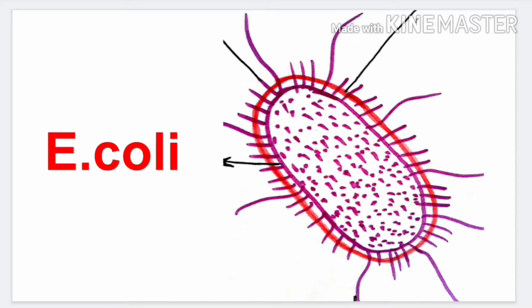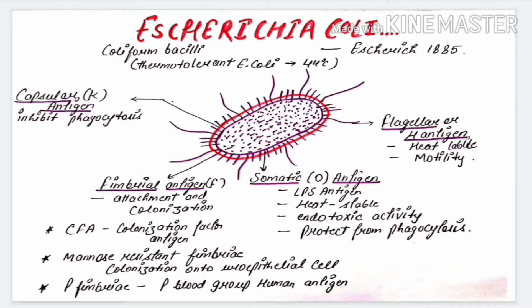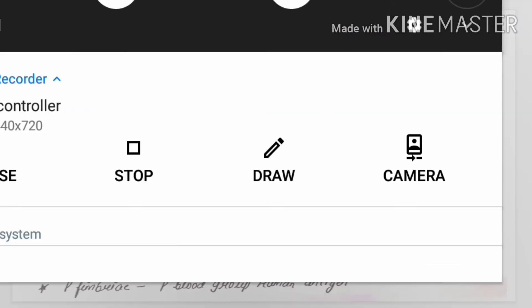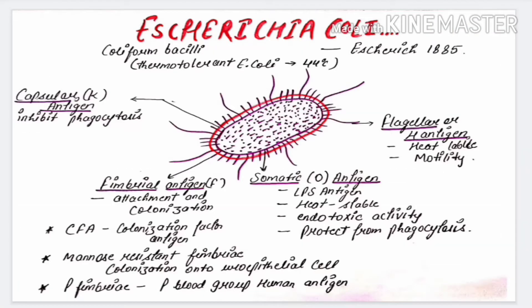Hello and welcome back everyone. Today we are going to discuss Escherichia coli, one of the most important and most encountered species as a human pathogen. First, we will go through its morphology and history.